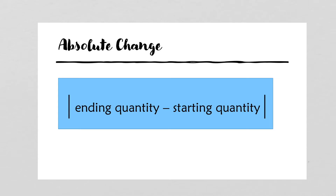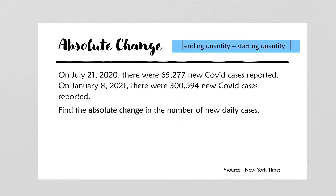Let's apply this to our original problem. So on July 21, 2020, there were 65,277 cases. This is our starting quantity because it comes first. At a later date, specifically in January, almost six months later, we have another amount, and that amount is 300,594. That's our ending quantity.